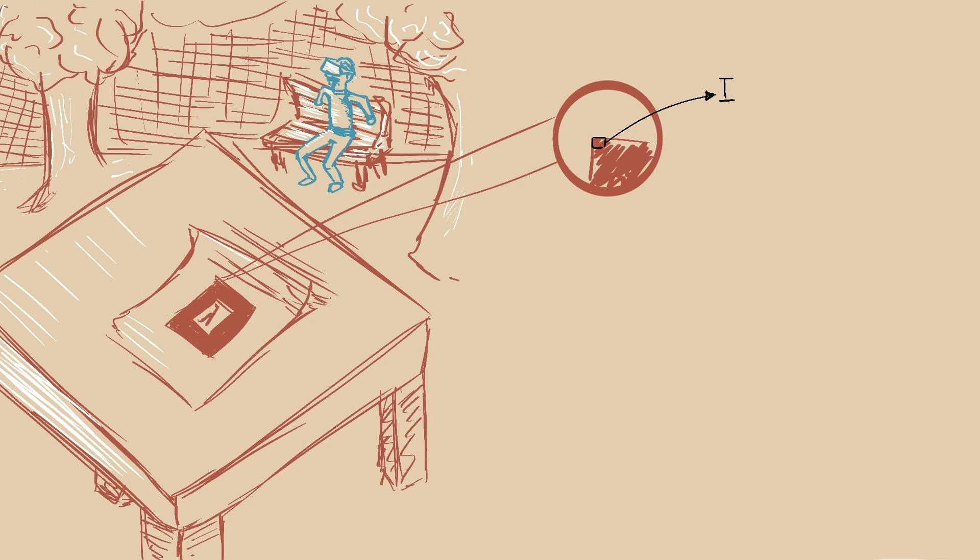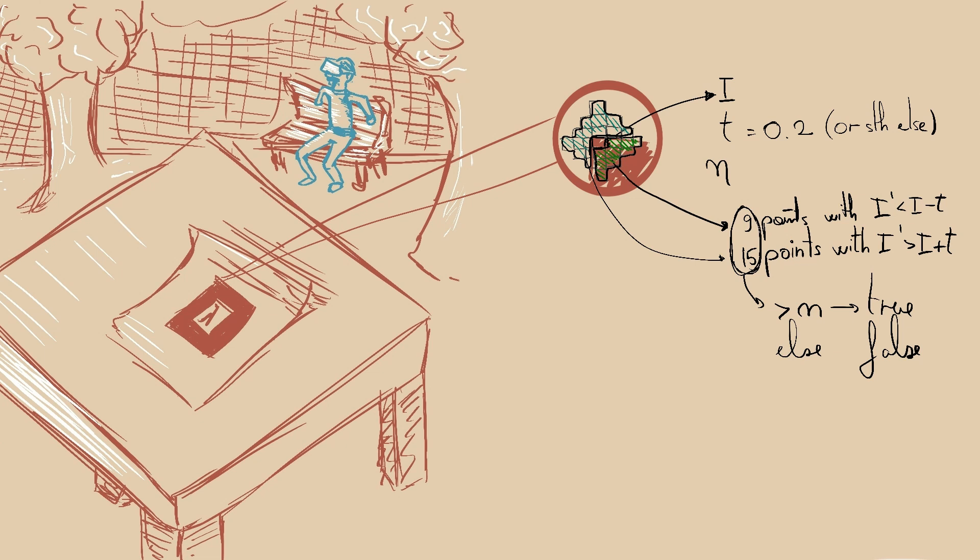Select a pixel with an intensity i, select a threshold value t, consider a circle of some pixels around it, and if there are a number of n contiguous pixels in the circle brighter than i plus t or darker than i minus t, then we know that is a corner. There are of course other things to do to fasten this algorithm, but let's keep it simple and clear for now.